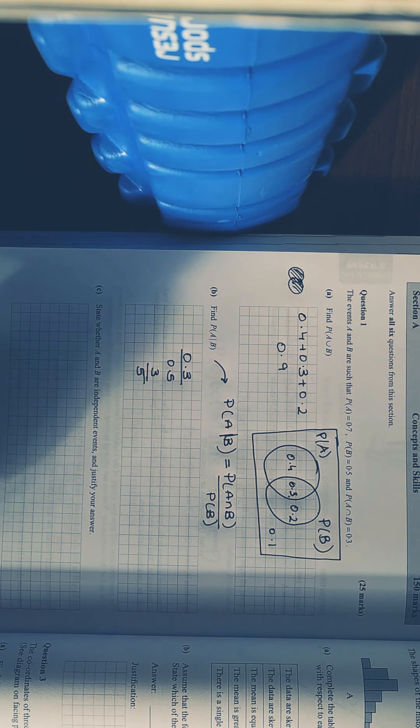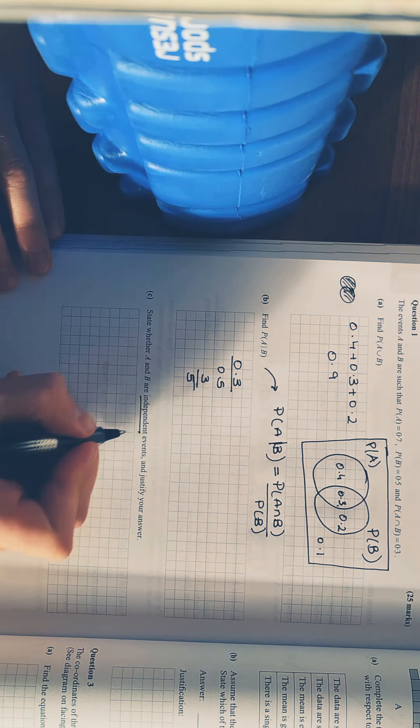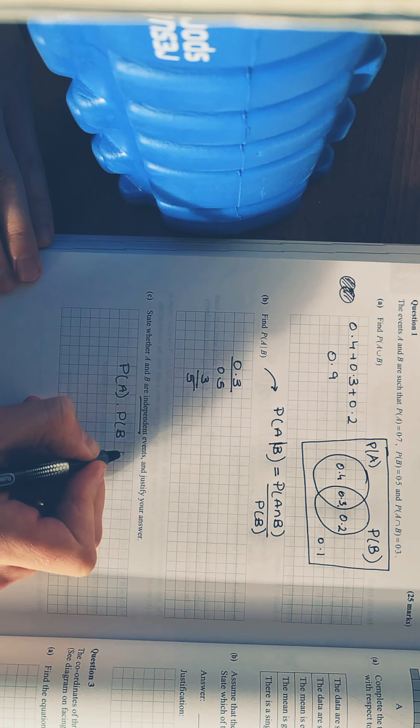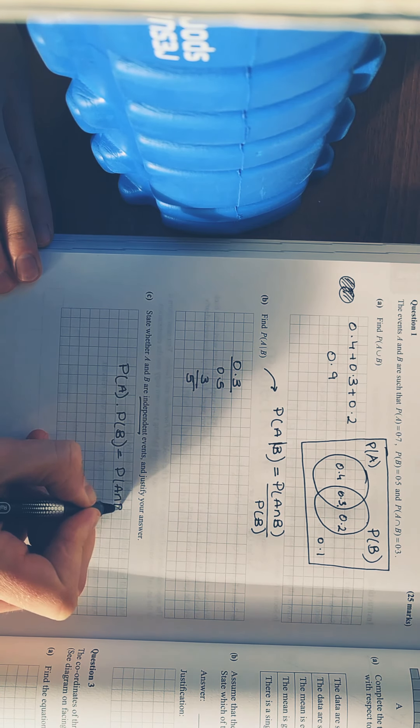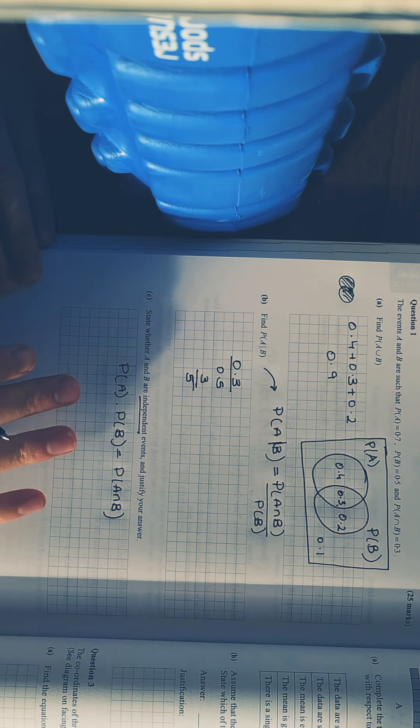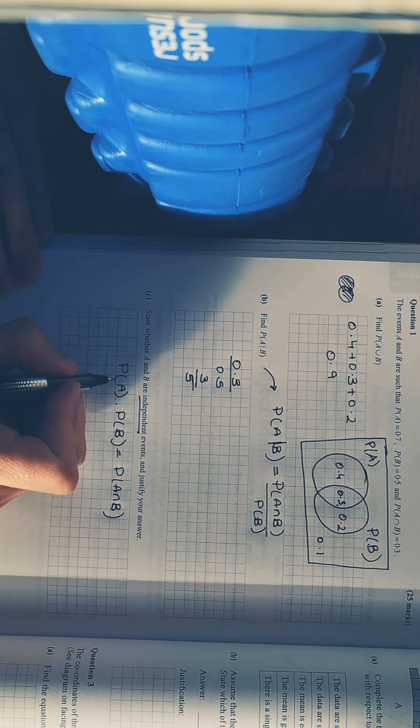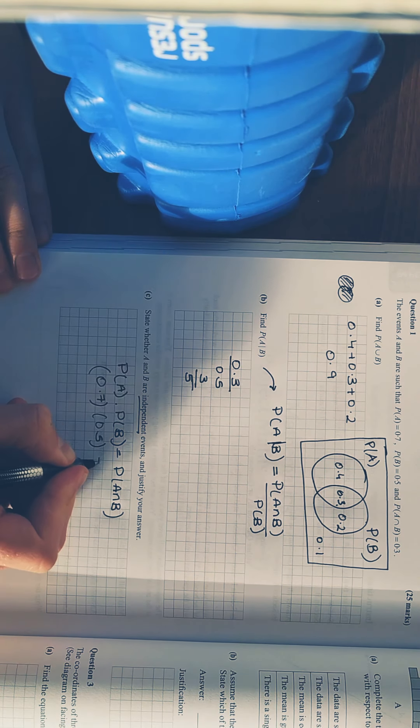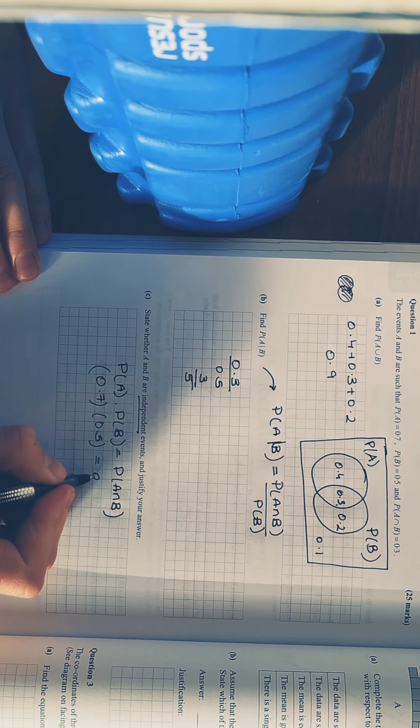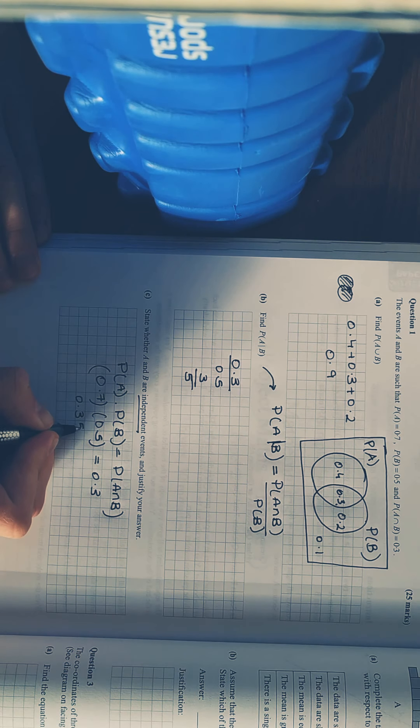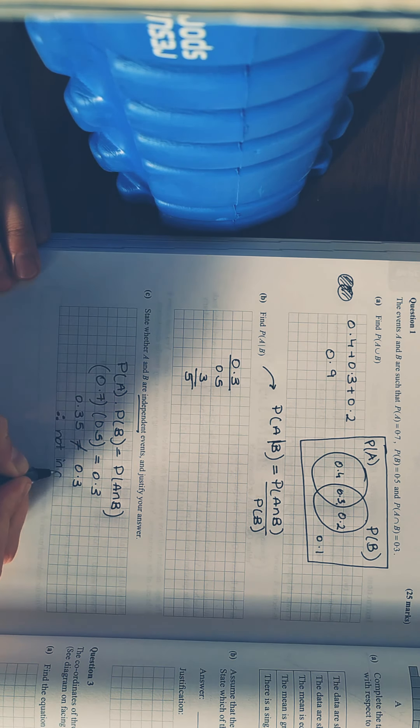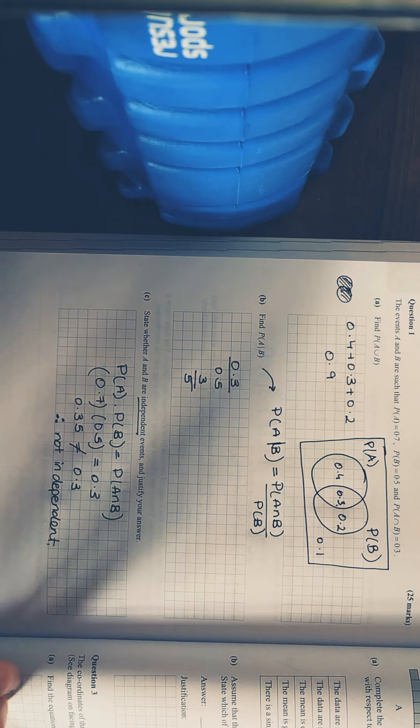And then, last one, state whether A and B are independent. Again, once you see independent, you must learn the formula. Probability of A times the probability of B equals the probability of A intersection B. So, that happens if they're independent. Throw in the values. If one side works out to be the same, they're independent. So, the probability of A is 0.7 times the probability of B is 0.5. Is that the same as intersection, which is 0.3? Put that in your calculator on the left-hand side. They're not equal, therefore, not independent. If it was 0.3 equal to 0.3, they're independent. Handy.